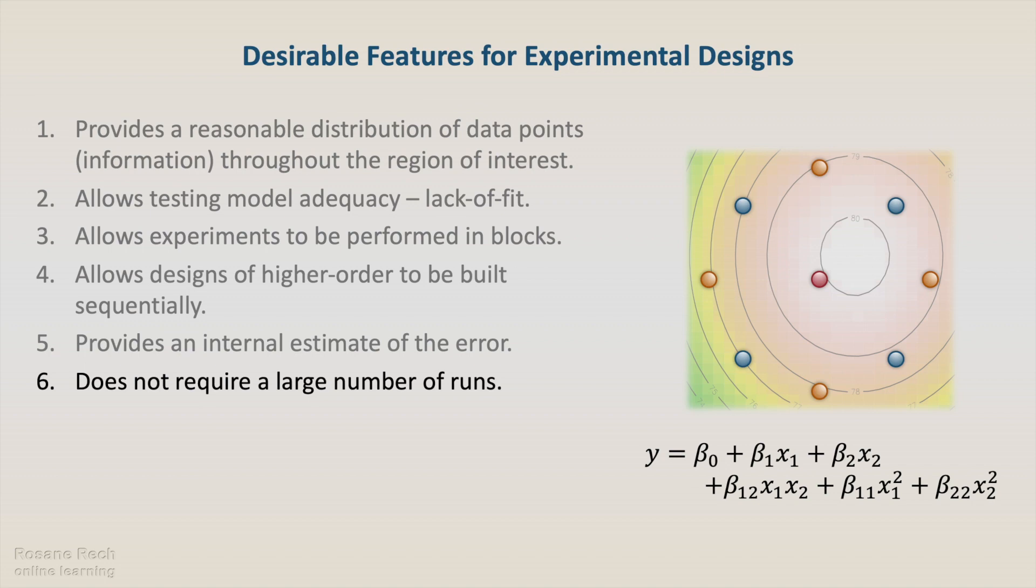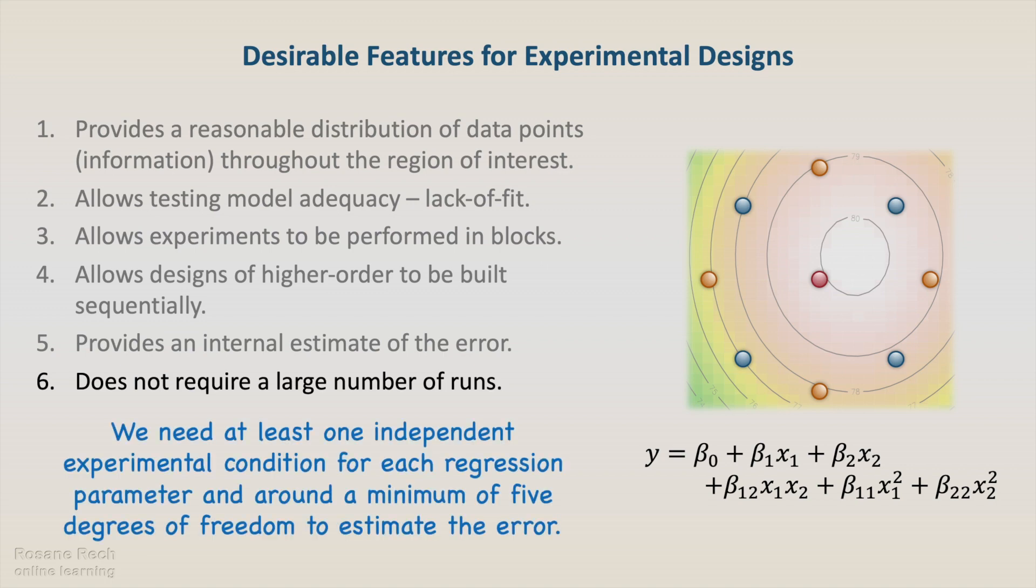However, an inadequate low number of runs can hinder the analysis by aliasing factors and interactions, and making it difficult for a reliable estimation of the error. We need at least one independent experimental condition for each regression parameter, and around a minimum of 5 degrees of freedom to estimate the error.